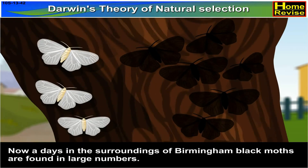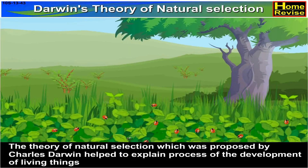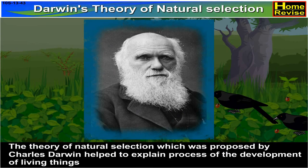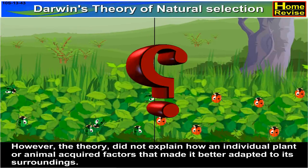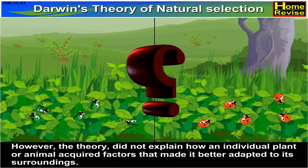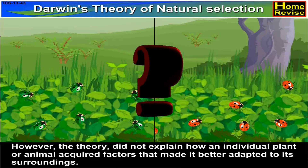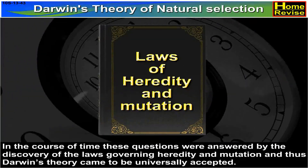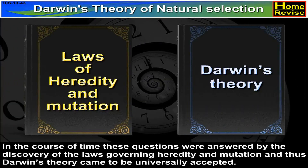Nowadays, in the surroundings of Birmingham, black moths are found in large numbers. The theory of natural selection, proposed by Charles Darwin, helped to explain the process of the development of living things. However, the theory did not explain how an individual plant or animal acquired factors that made it better adapted to its surroundings. In the course of time, these questions were answered by the discovery of the laws governing heredity and mutation, and thus Darwin's theory came to be universally accepted.